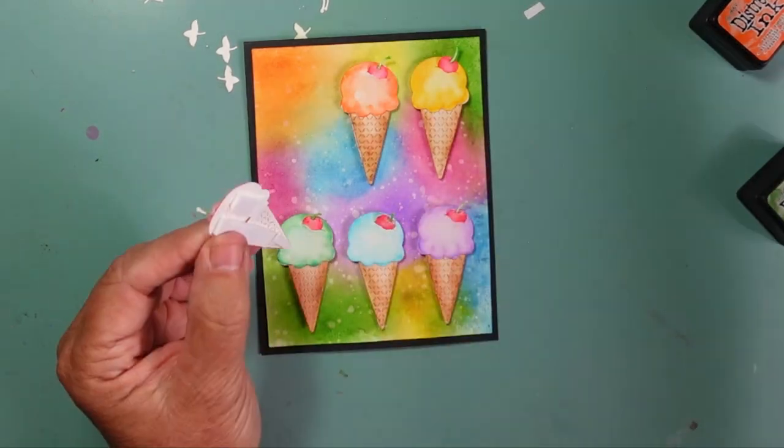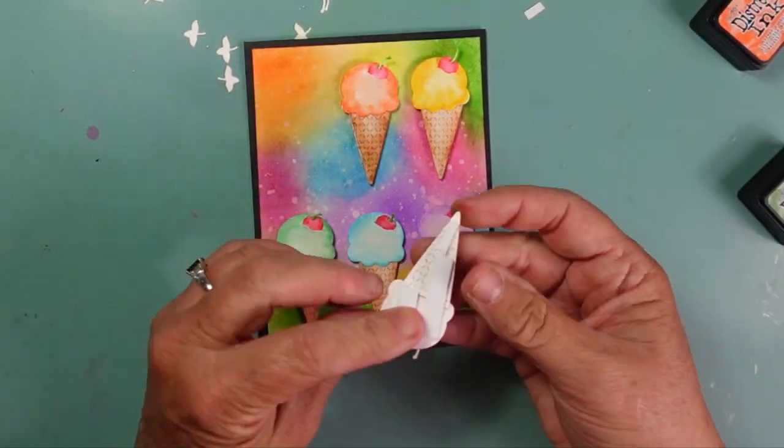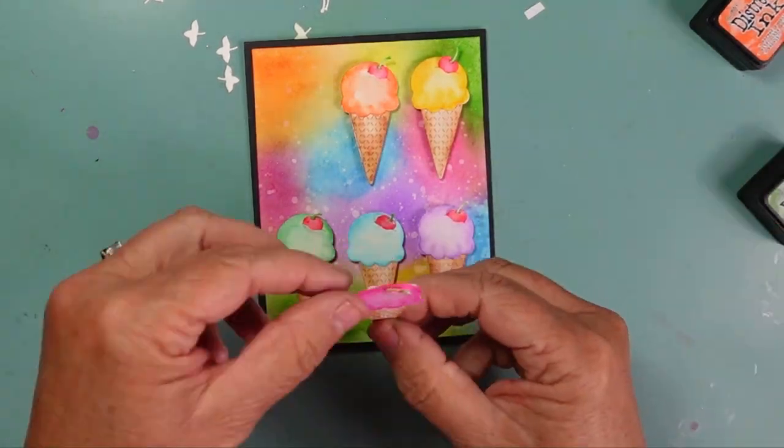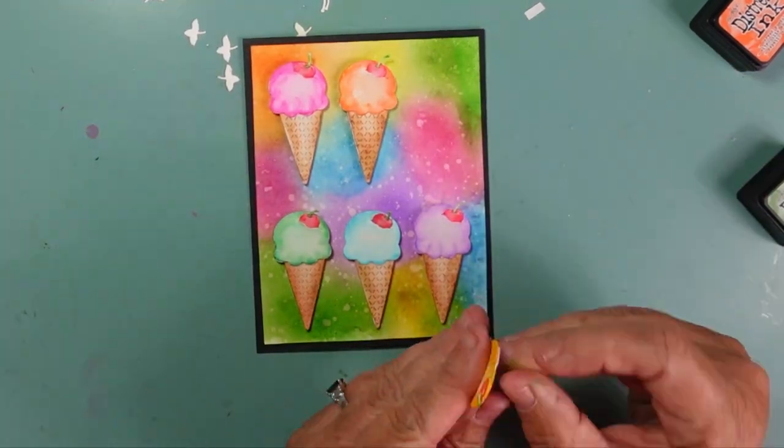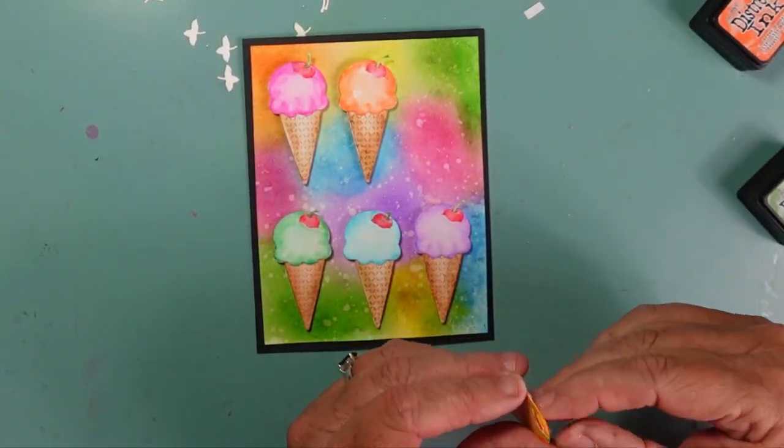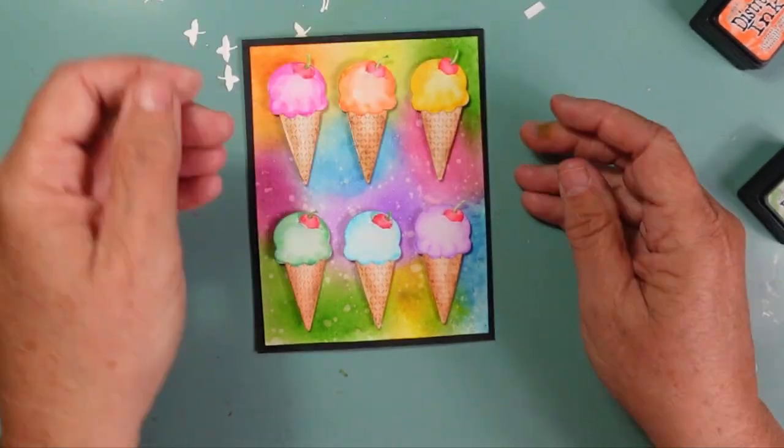Once I did that, I wanted to make sure that I had that same pop that I do with the black on this card base, so I cut out just a little border that I could adhere the word 'hello' to. Then I'm going to add the foam tape to the back of it and adhere it to my card, and that will complete my card for today.